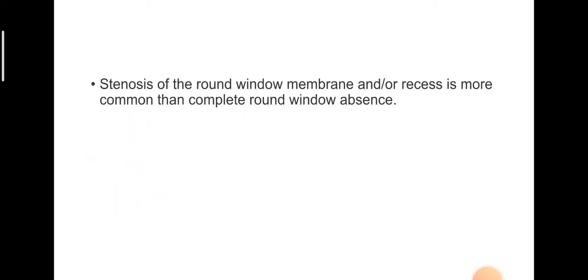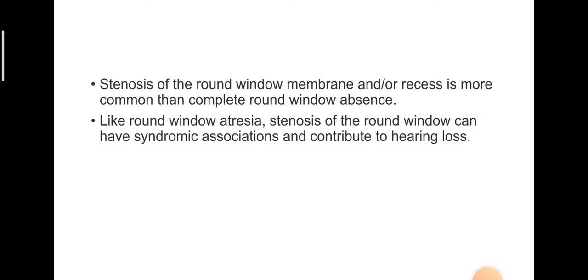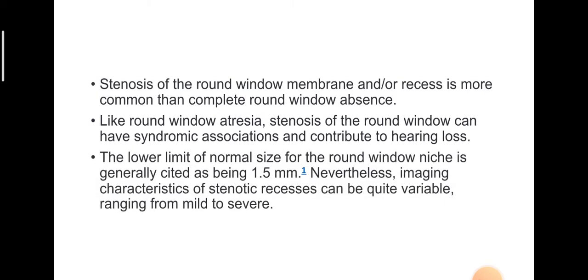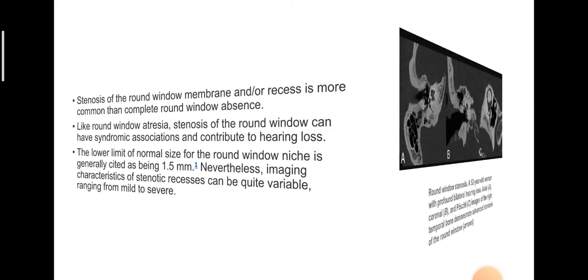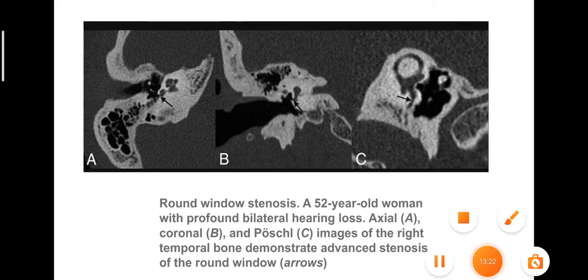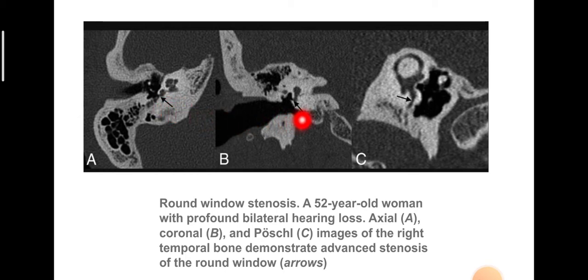Stenosis of the round window membrane or recess is more common than complete round window absence. Like round window atresia, stenosis can have syndromic associations and contribute to hearing loss. The lower limit of normal size for the round window is generally cited as 1.5 millimeters. Imaging characteristics of stenotic recesses can be quite variable, ranging from mild to severe. Here is a 52-year-old woman with bilateral profound hearing loss, with images revealing advanced stenosis of the round window.